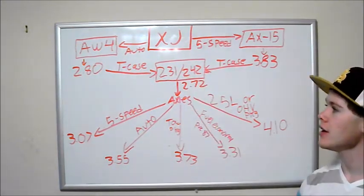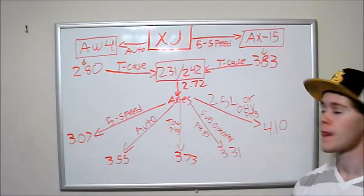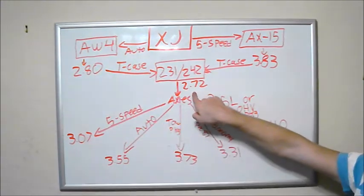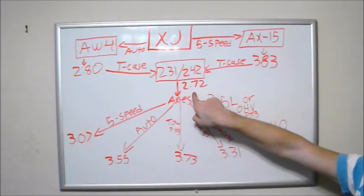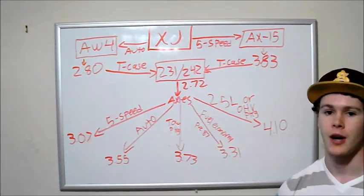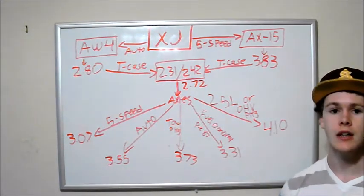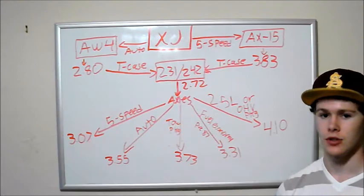So take what you have here and you do your calculations. So for me, I know I have an automatic, so I have a 2.80 times a 2.72 for my transfer case, and since I have an automatic again, I'll multiply that by 3.55. So take whichever numbers you need, multiply them together, and that's going to give you your crawl ratio.